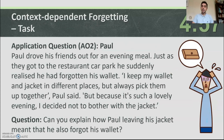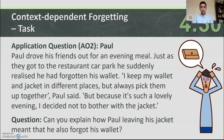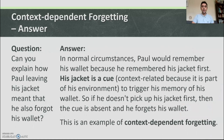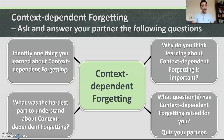Application question: Paul drove his friends out for an evening meal. Just as they got to the restaurant car park he suddenly realized he'd forgotten his wallet. Paul said he keeps his wallet and jacket in different places but always picks them up together, but because it was a lovely evening he decided not to bother with the jacket. In normal circumstances Paul would remember his wallet because he remembered his jacket first — his jacket is a cue, context-related, to trigger his memory of his wallet. Without the jacket the cue is absent and he forgets his wallet. This is an example of context dependent forgetting.